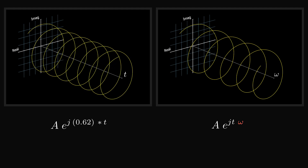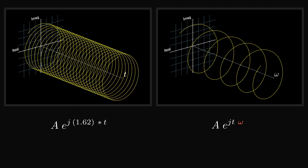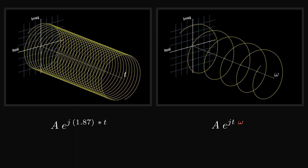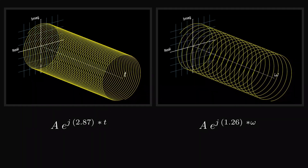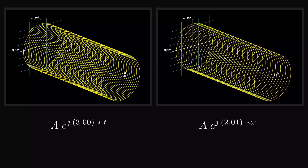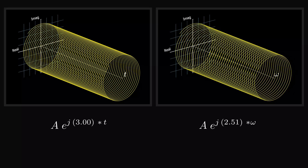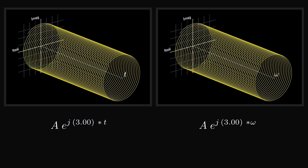In the time domain, at each frequency there is a different complex exponential. In the frequency domain, there is a different complex exponential at each instant of time. That's a very interesting phenomenon. A complex exponential in the frequency domain is just a single point in the time domain, and a complex exponential in the time domain is just a single point in the frequency domain.